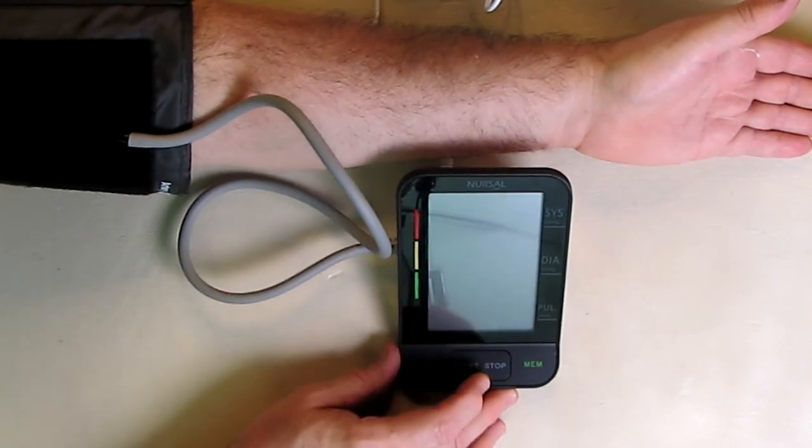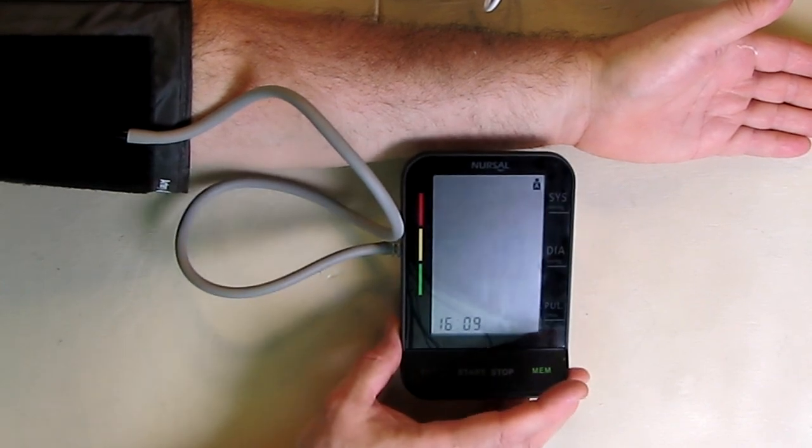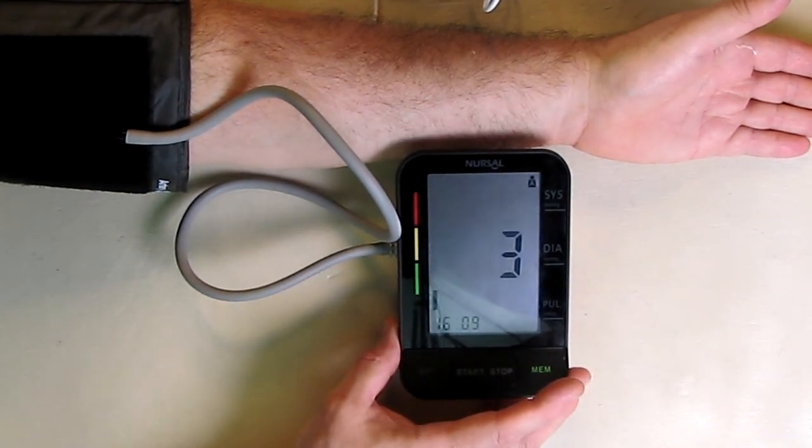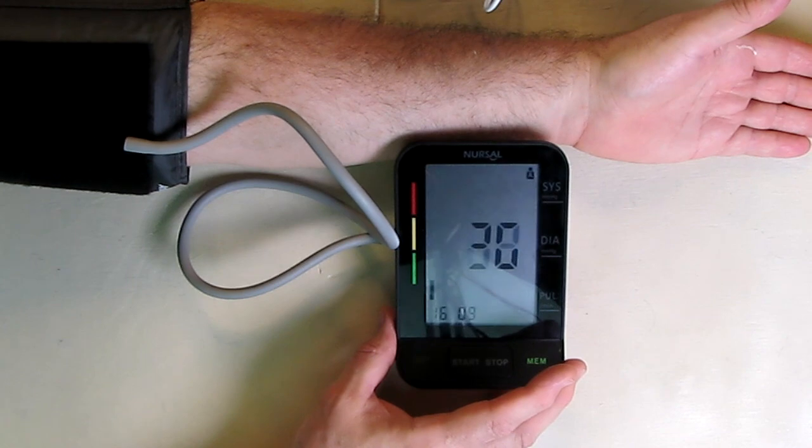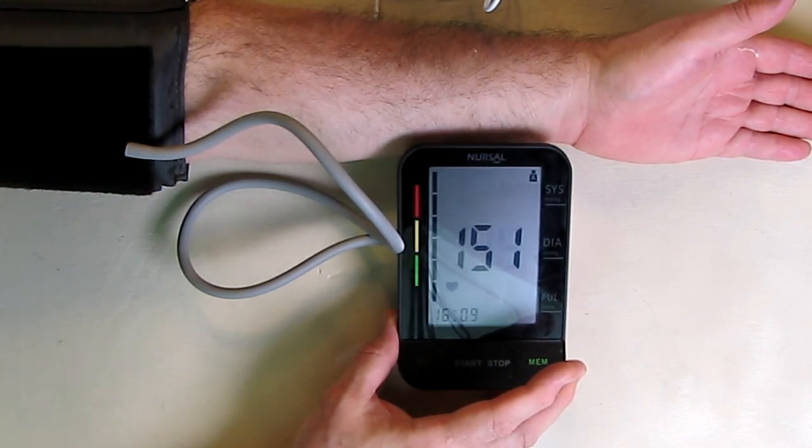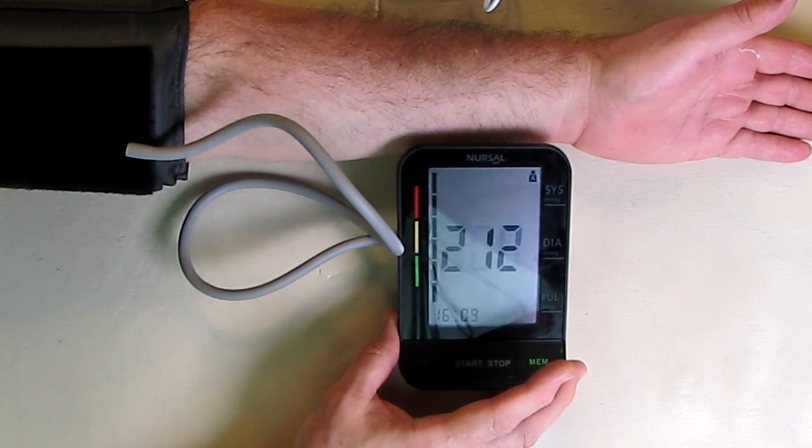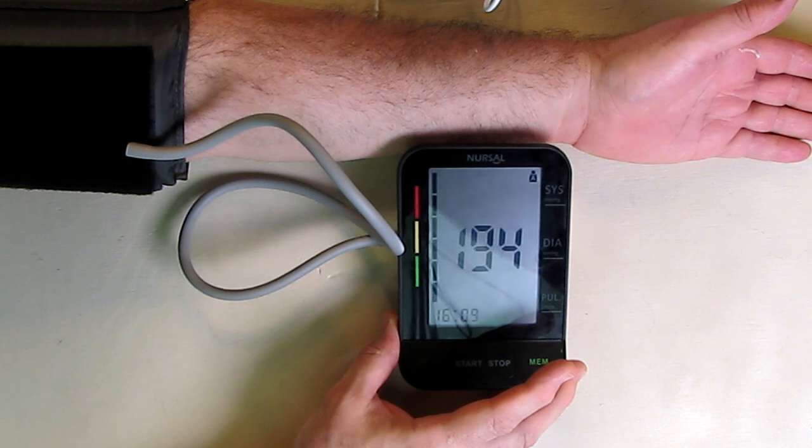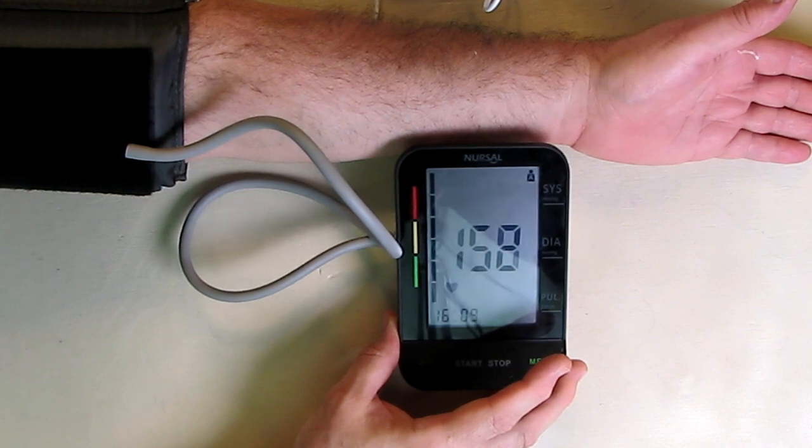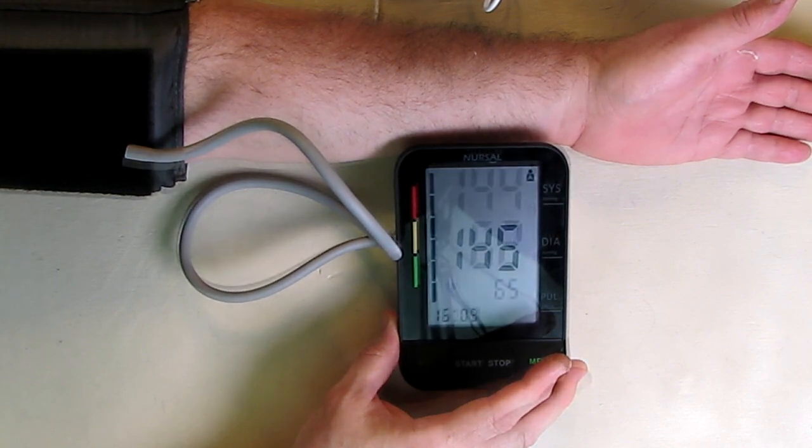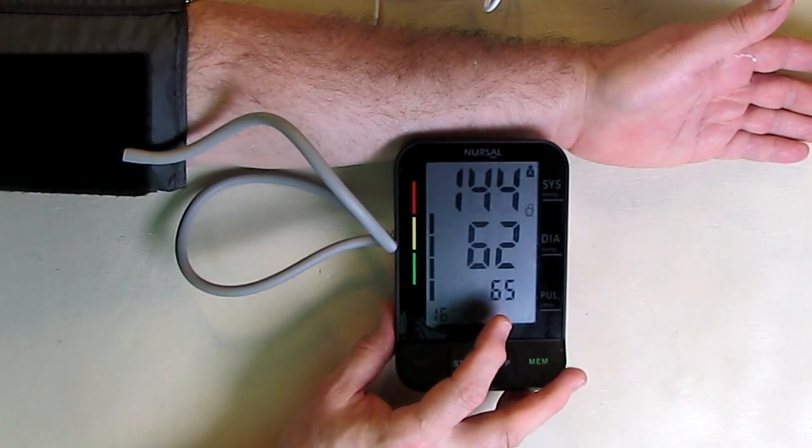Now, let's try to get a blood pressure measurement. Hit the start button. You can hear it inflating. It's on user A. Now it's showing you the pressure. Now it's readjusting. See the little heart symbol over there? That's actually your pulse. And there you go. It's 144 over 62, and my pulse is 65.